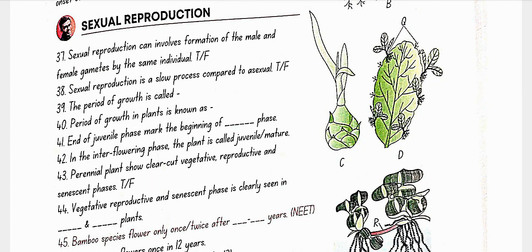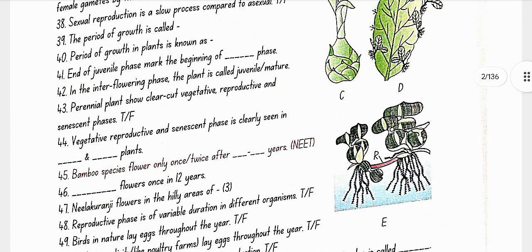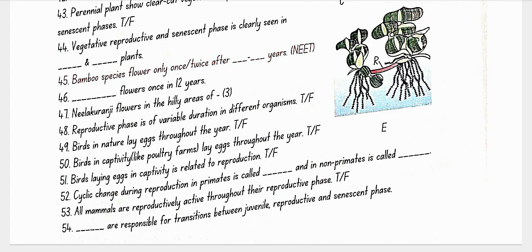Sexual reproduction can involve formation of male and female gametes by the same individual. Sexual reproduction is a slow process compared to asexual — true. The period of growth is called the juvenile phase; in plants it is known as the vegetative phase. End of juvenile phase marks the beginning of the reproductive phase. Vegetative, reproductive and senescent phases are clearly seen in annual and biannual plants — not perennial.